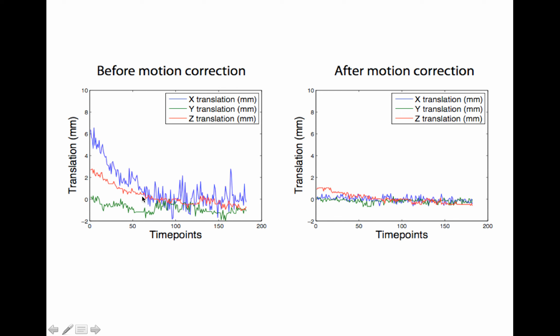You might be wondering why these all dip down through zero in the middle. The reason is that this is the middle TR that was used as the reference — obviously the reference doesn't need to be registered. Also, importantly, the images close to it in time, just before or just after, don't need to be moved much to match up with it. It's the ones that are further away in time that need to be moved more.